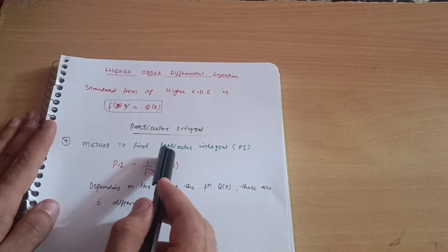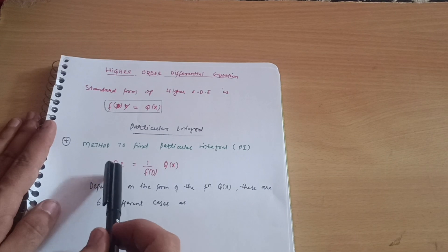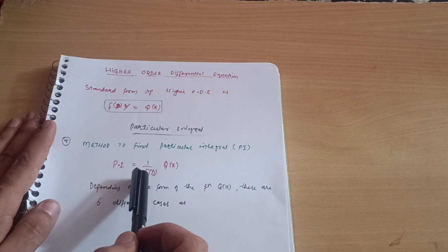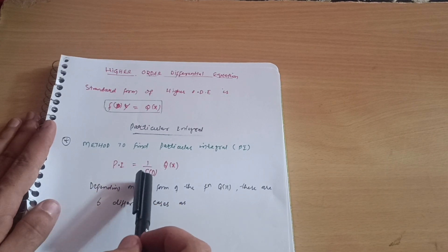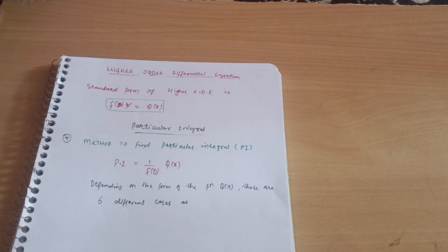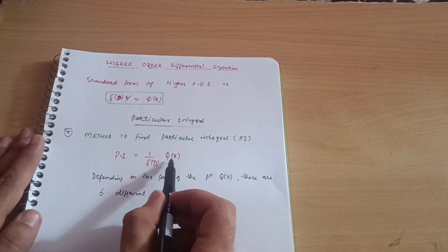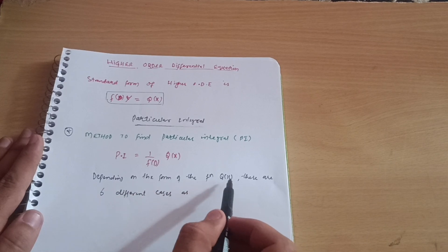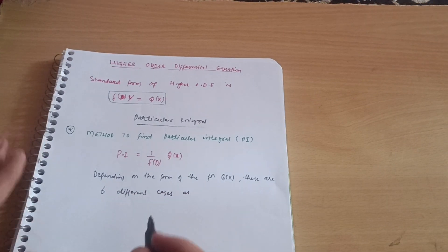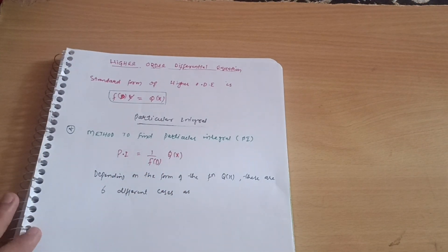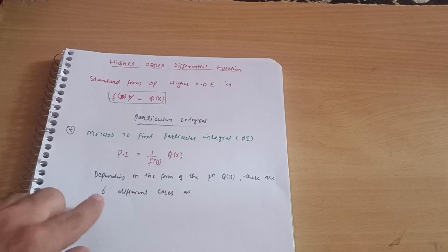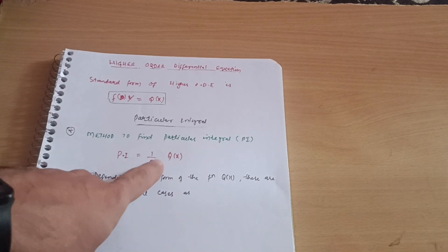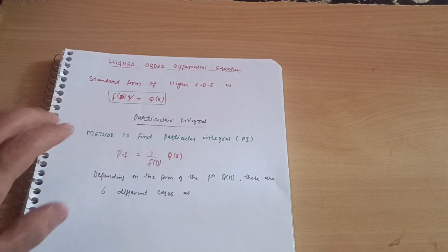The method to find the particular integral (PI) is given by PI = 1/f(D) · Q(x). This is your formula for the particular integral. It depends upon the type of function Q(x). Depending on the form of Q(x), there are six different cases.